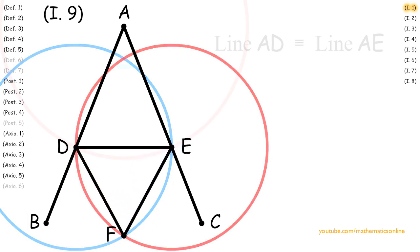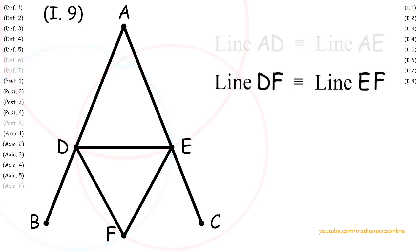Therefore, line DF is congruent to line EF. Next, with Postulate 1, we create line AF.